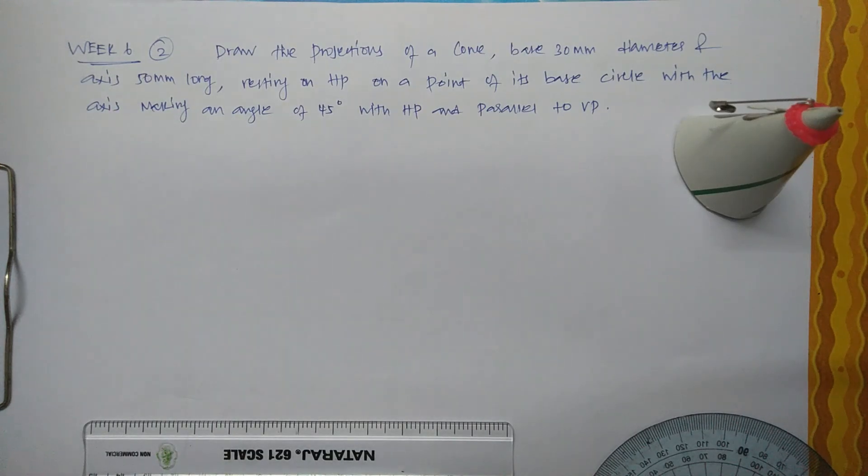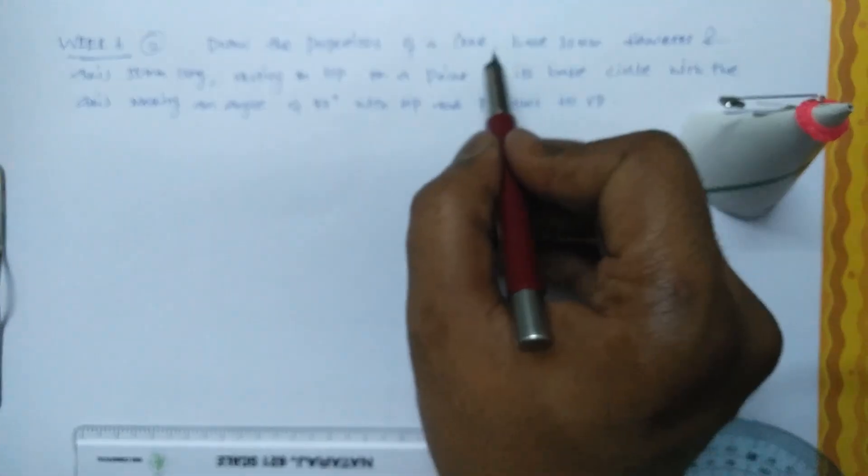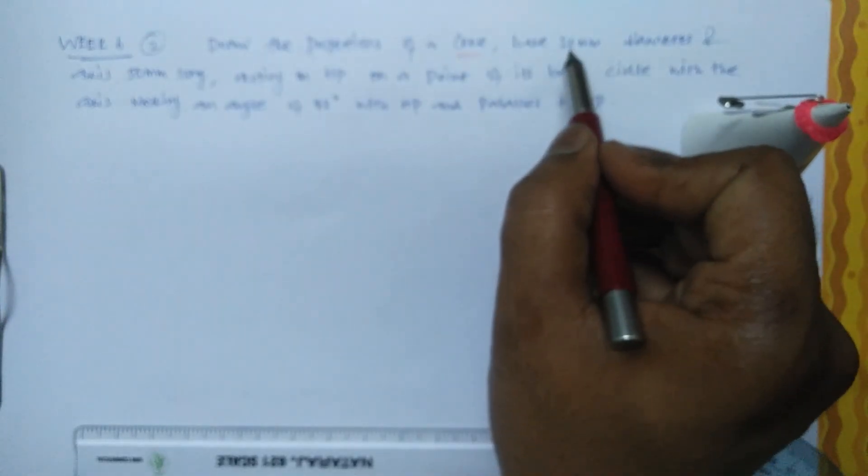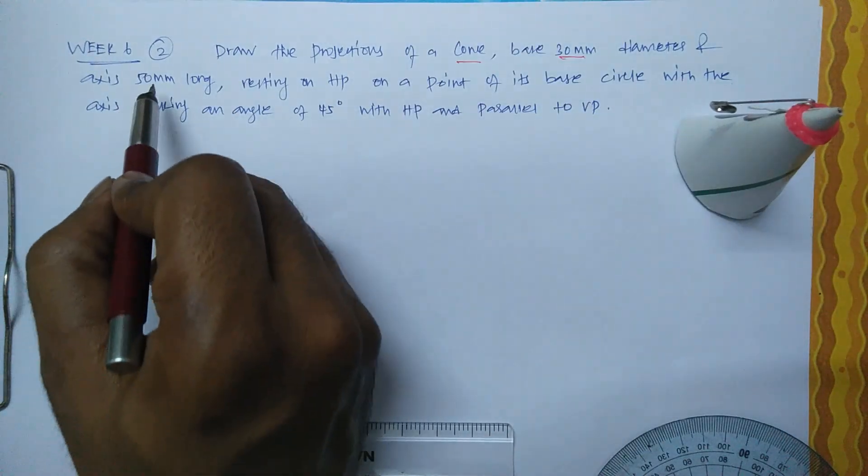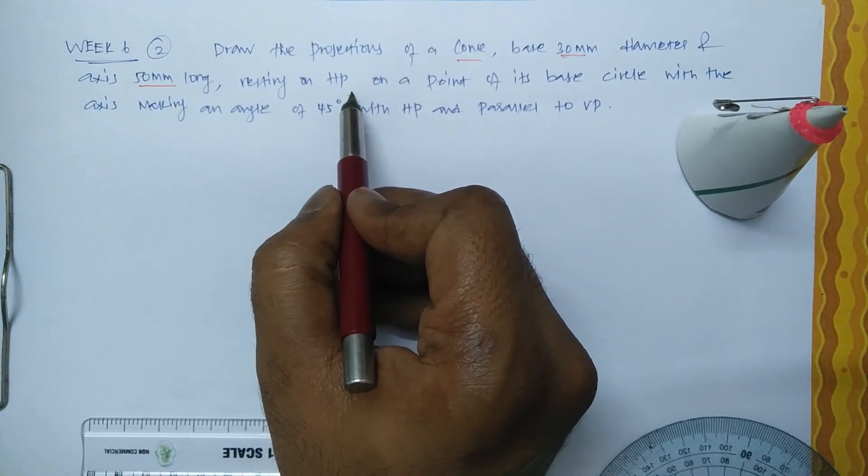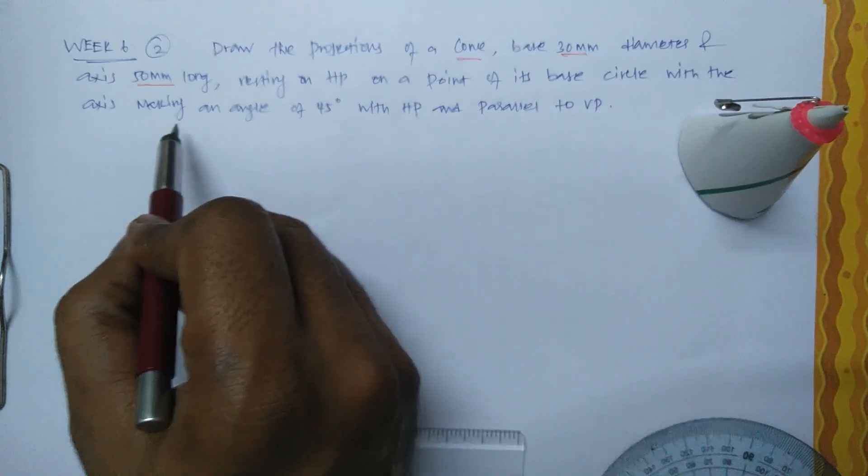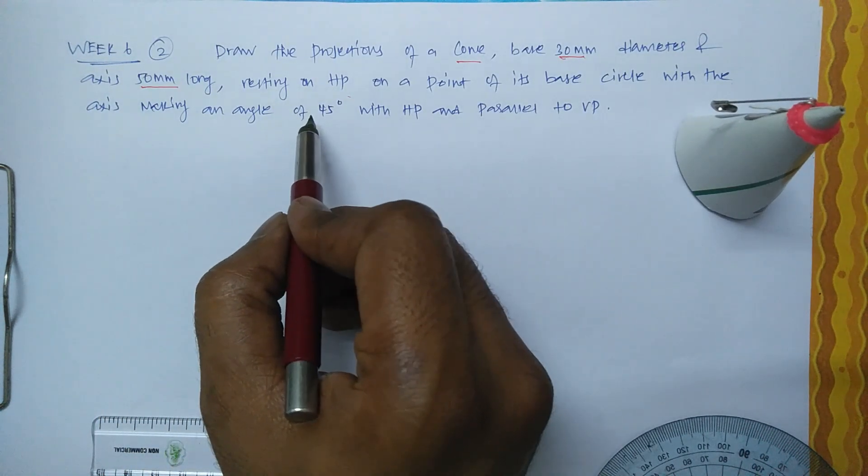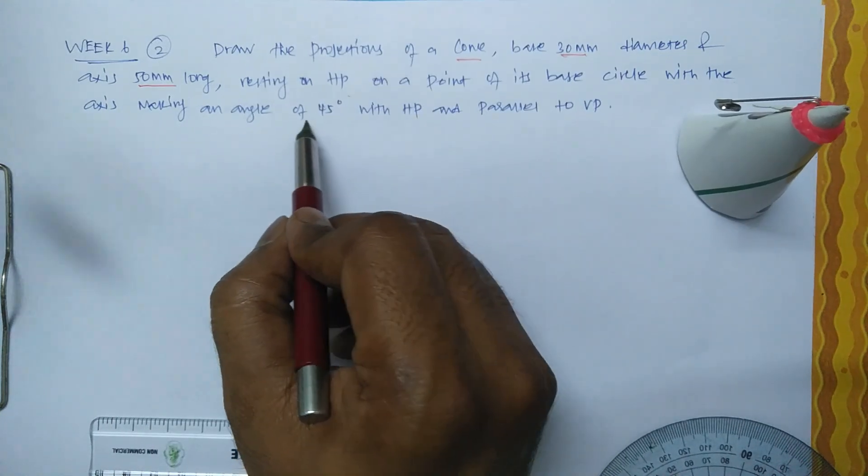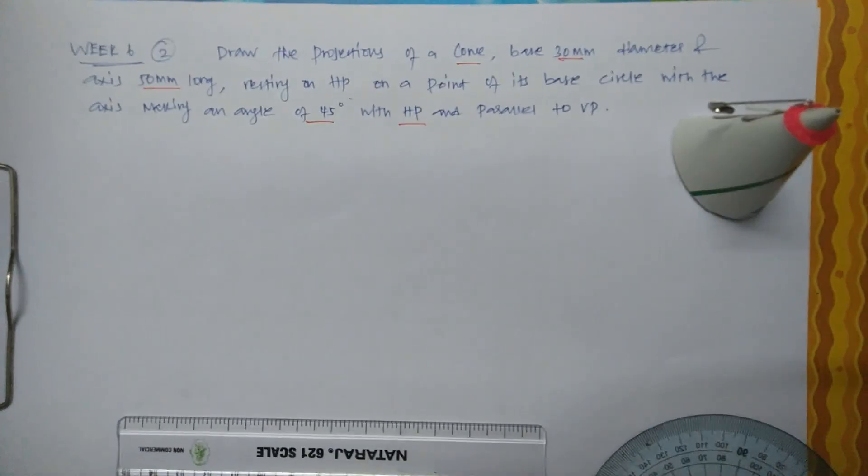Hello students, in this class we will draw the projection of a cone with base 30 mm diameter and axis 50 mm long, resting on HP at a point on its base circle, with the axis making an angle 45 degrees with HP and parallel to VP.